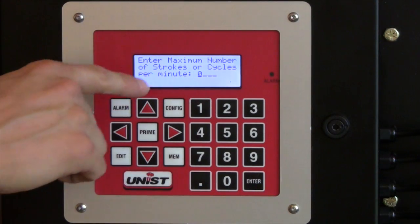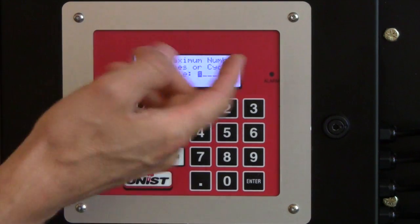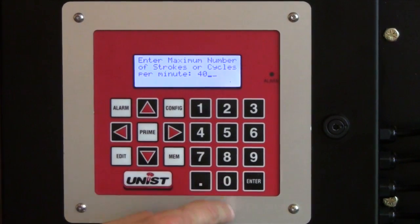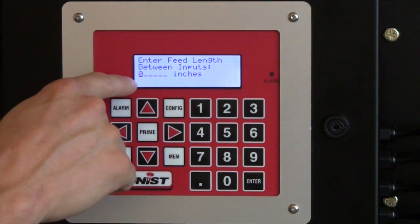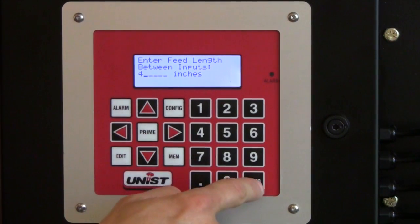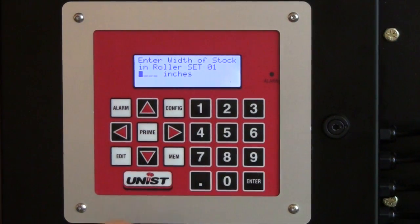So it asks what's the maximum number of strokes or cycles per minute. Let's say this particular press is going to run 40 strokes per minute. The next question is what's the feed length between inputs. Let's say for this job it's four inches between inputs so it's a four inch progression.